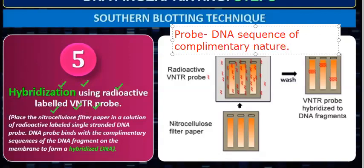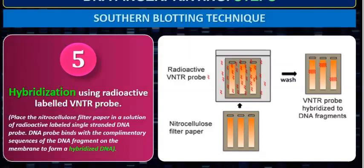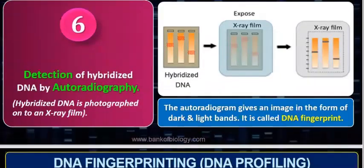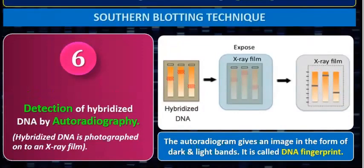This process is known as hybridization using radioactive labeled VNTR probe. A probe is a DNA sequence of complementary nature that binds to the target sequence. So that was all about hybridization and the Southern blotting technique. Now we are going to discuss detection of the hybridized DNA by autoradiography.